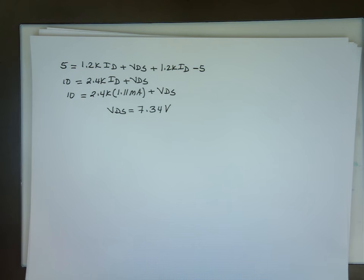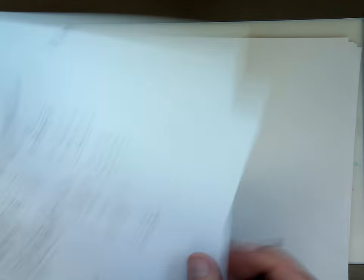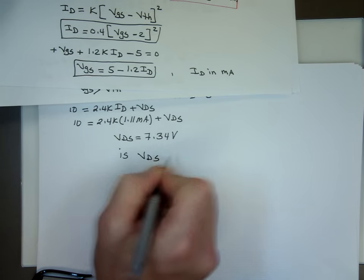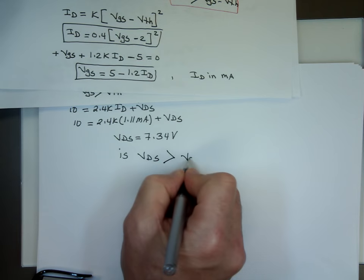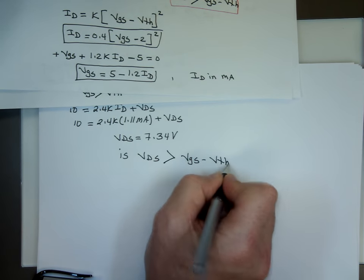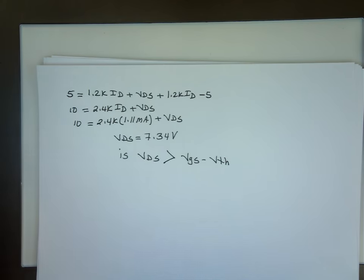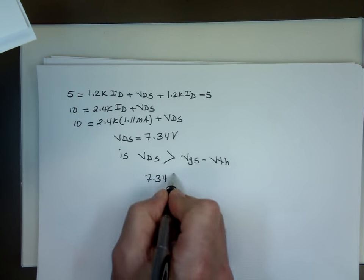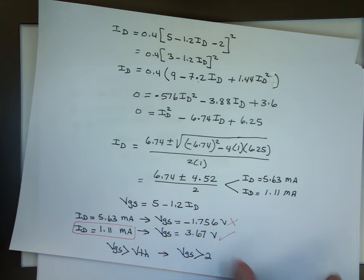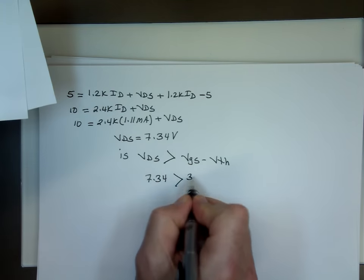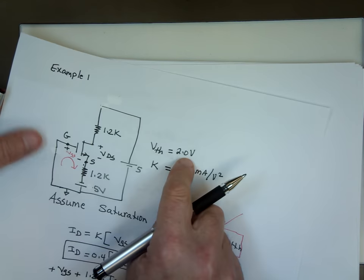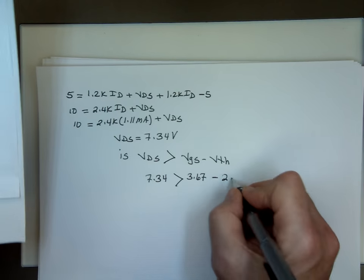Now, let's see if I can satisfy this condition. This condition is VDS bigger than VGS minus V7. To be in saturation, you want to satisfy that condition. What's my VDS? 7.34. What's my VGS? Yes, I got that right here, 3.67. What's my VT that was given to me here? 2. And what do you know? We did satisfy that condition.